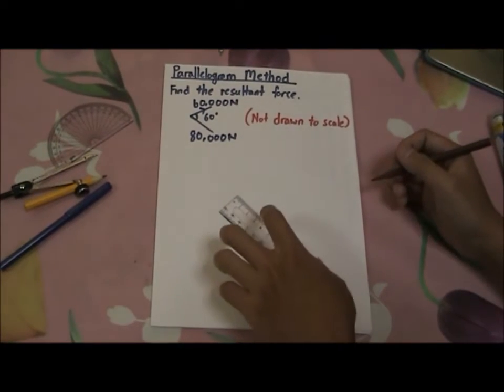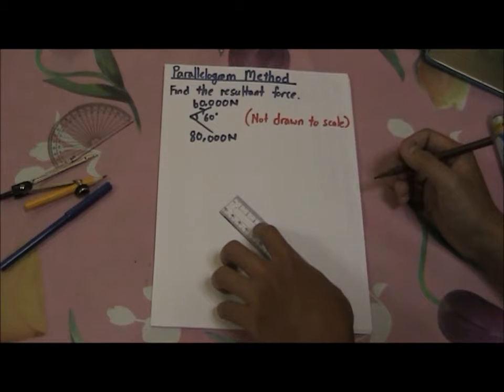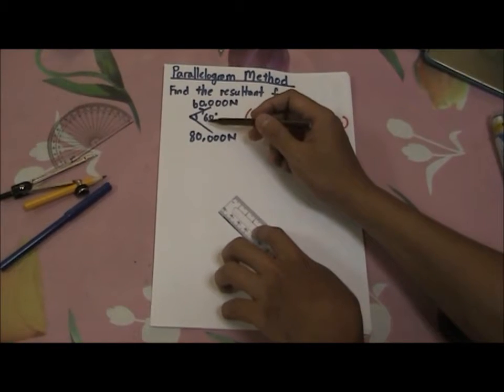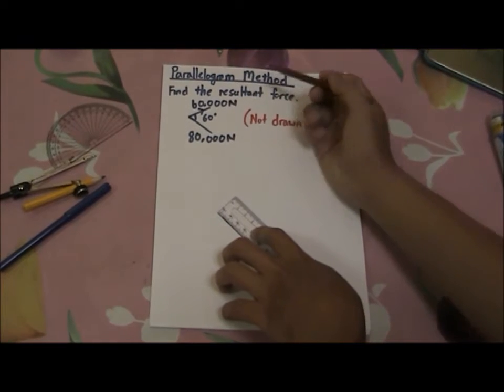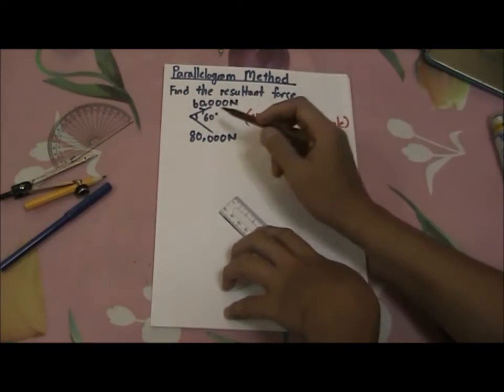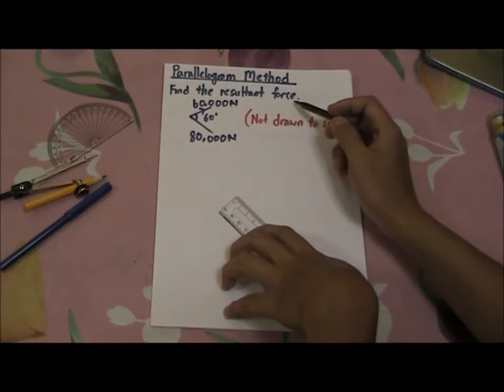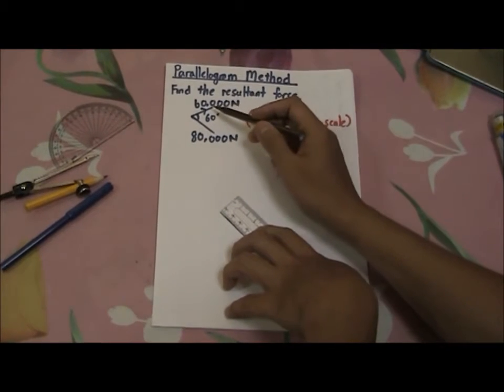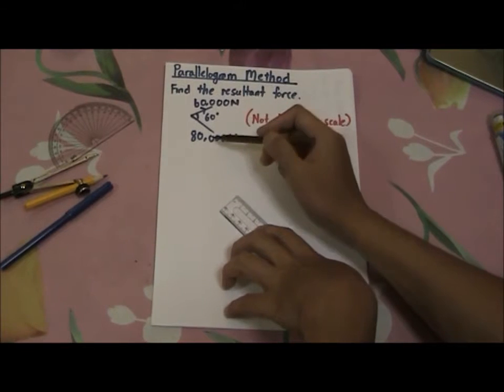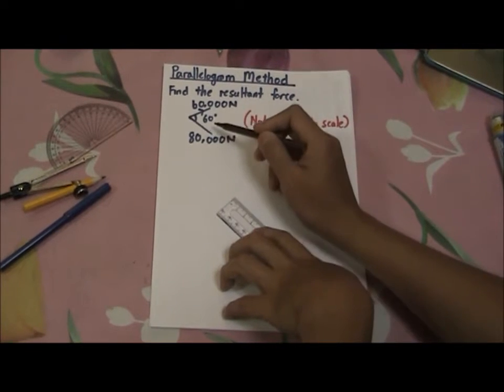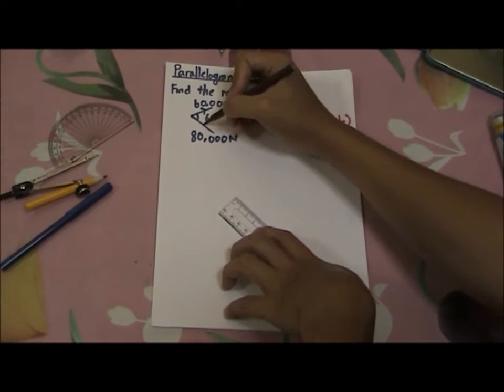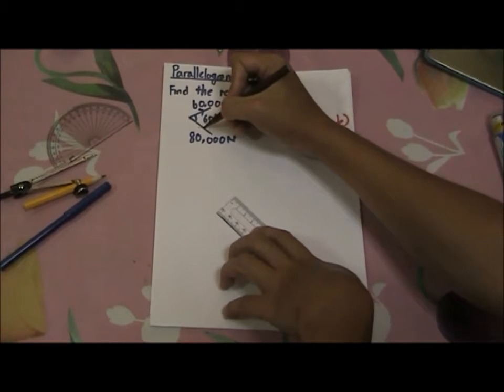Hi, I'm Mr. O-Ming Yeo. I'm going to show you how to find the resultant force of two non-parallel forces using the parallelogram method. Let's take a look at this question. Find the resultant force of this setup here. There's a 60,000 newton force here and an 80,000 newton force here, separated by an angle of 60 degrees.